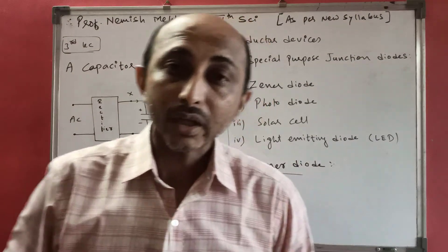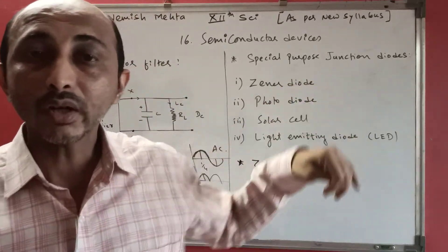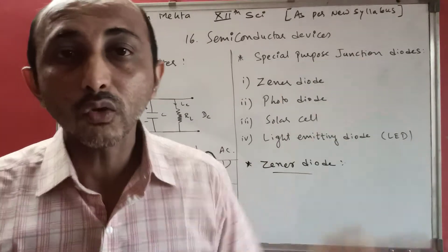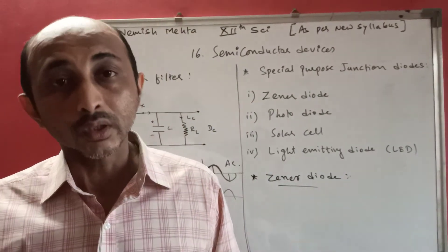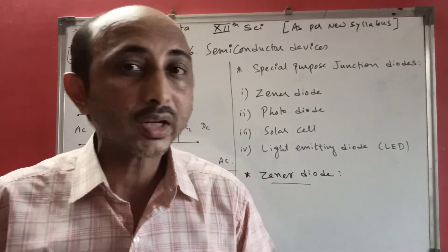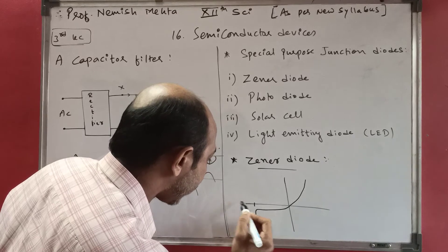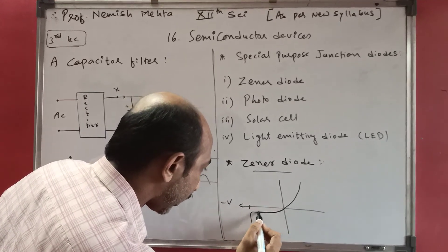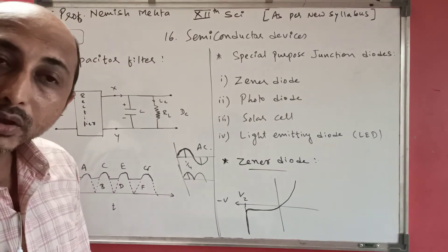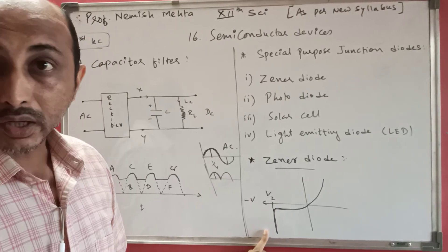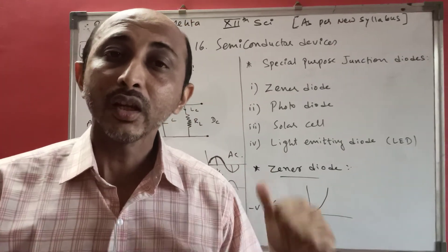A Zener diode is a specially manufactured PN junction diode that operates in the breakdown region under reverse bias. As the current goes increasingly negative, the voltage is kept fixed at VZ. The current may drop but the voltage remains stable - that is why it is used as a voltage stabilizer. It is a specially manufactured diode that works in the breakdown region.